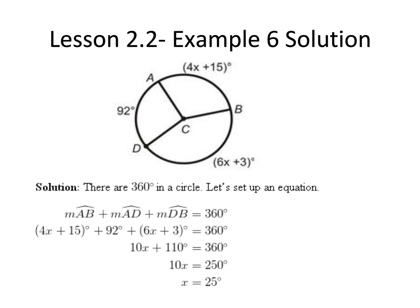By combining like terms, our equation becomes 10X plus 110 equals 360 degrees.